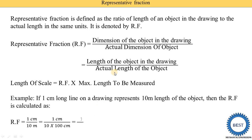Using the equation we already noted, length of the object in the drawing is one centimeter divided by actual dimensions of the object, which is 10 meters. This means we are using a reduced scale — the actual length is larger but we draw a smaller line, so it is considered a reduced scale.